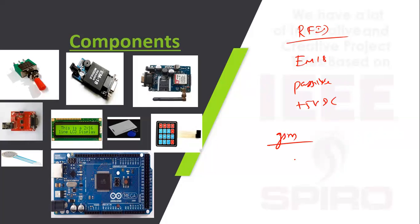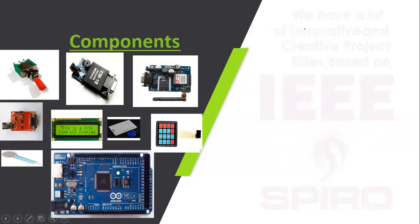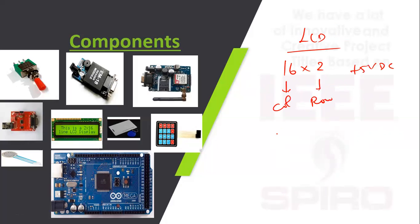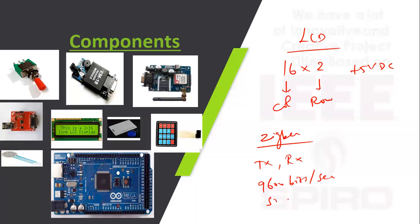Next is the GSM module — we are using SIM800L, a 2G-based module that can send SMS or make calls. For the LCD, we are using a 16-column, 2-row display operating at +5V DC. Next is Zigbee, which acts as both transmitter and receiver at a baud rate of 9600 bits per second. For the keypad, we are using a 4x4 or 4x3 matrix.